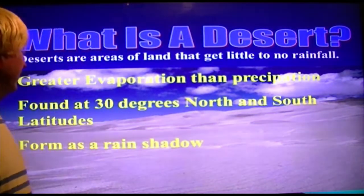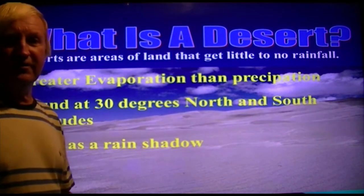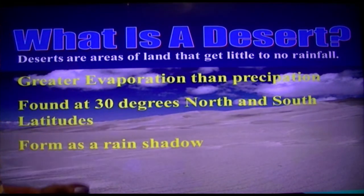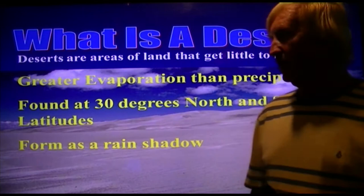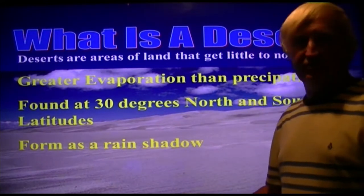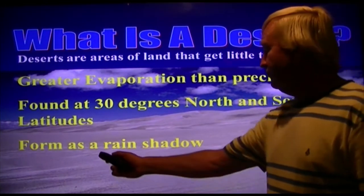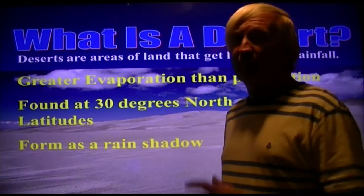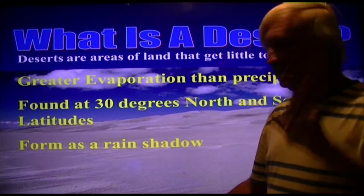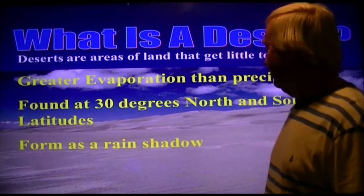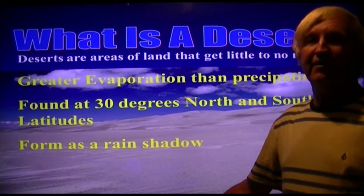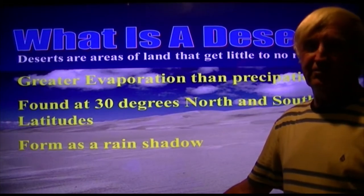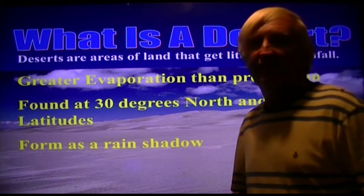One thing to know for the quiz is that by definition, a desert is a region that has greater evaporation than precipitation. Natural deserts are found at 30 degrees north and 30 degrees south latitude. Deserts can also form as a rain shadow due to mountains, but they're not considered natural deserts. Natural deserts are defined as having a net loss of water year to year.